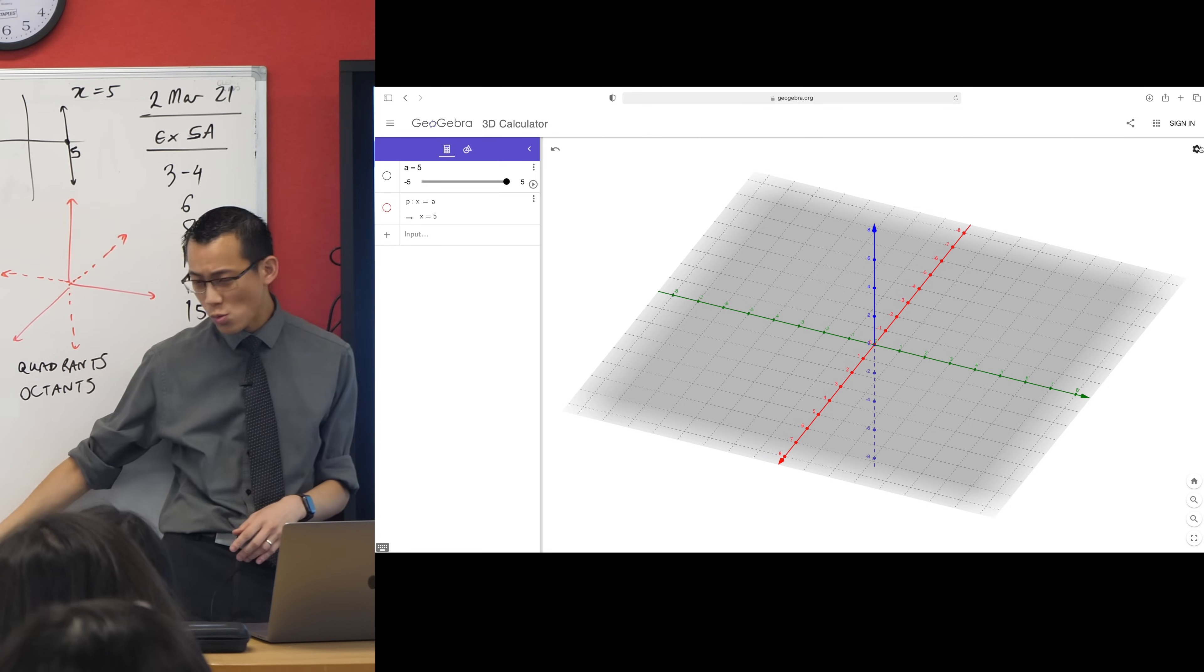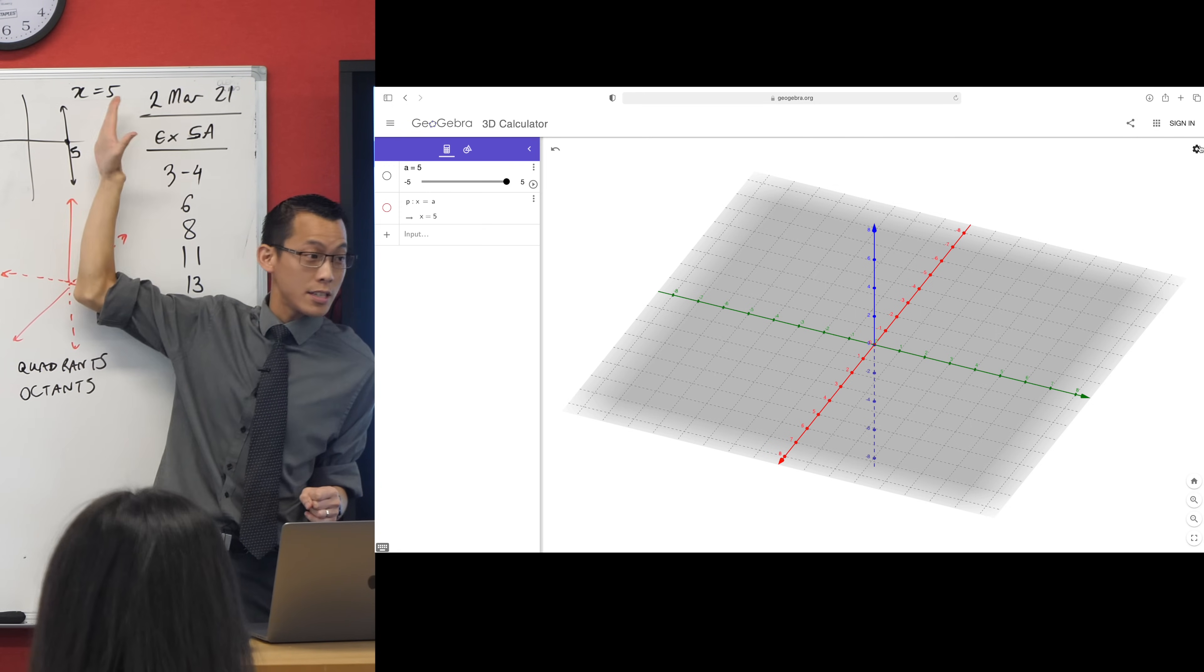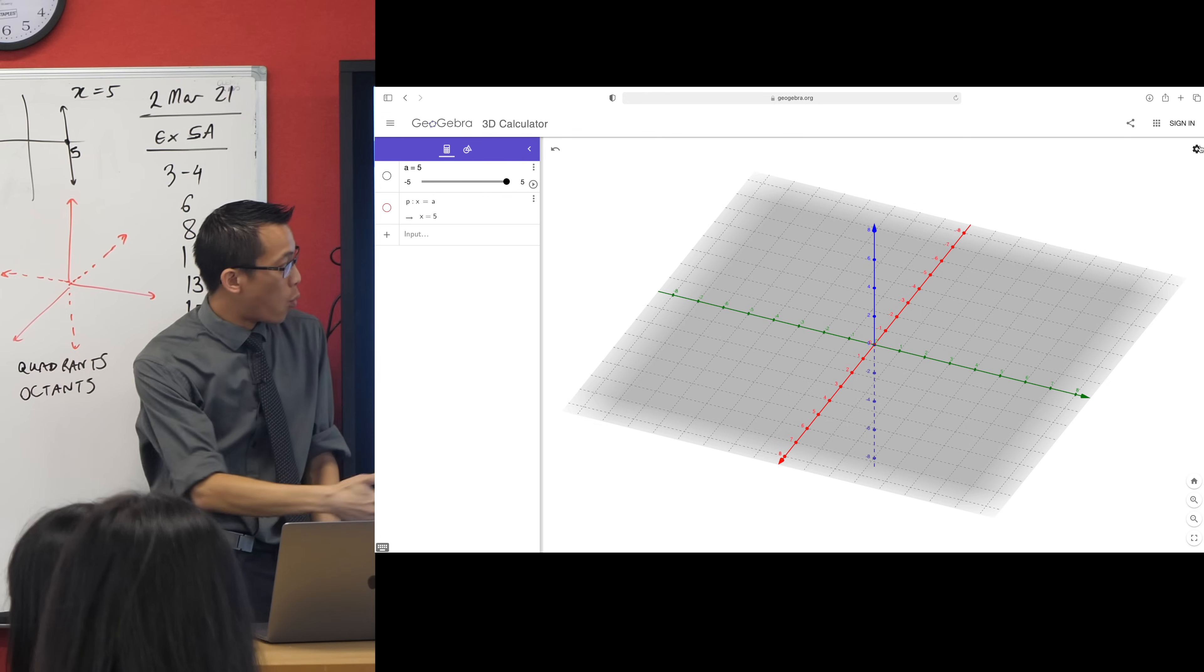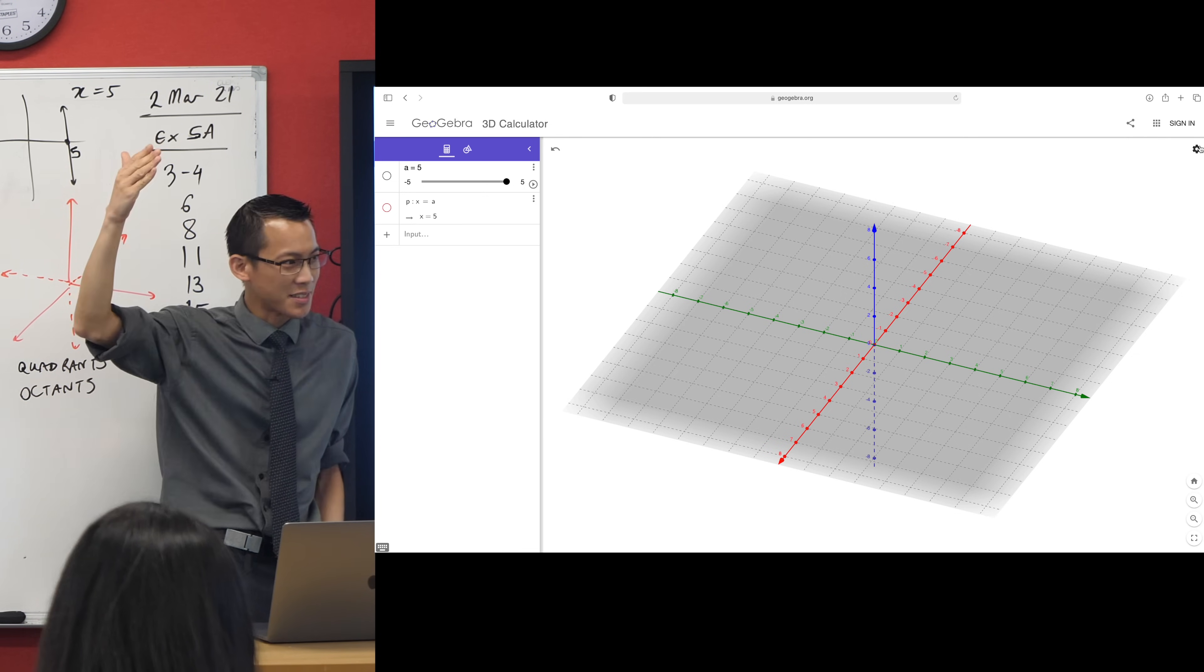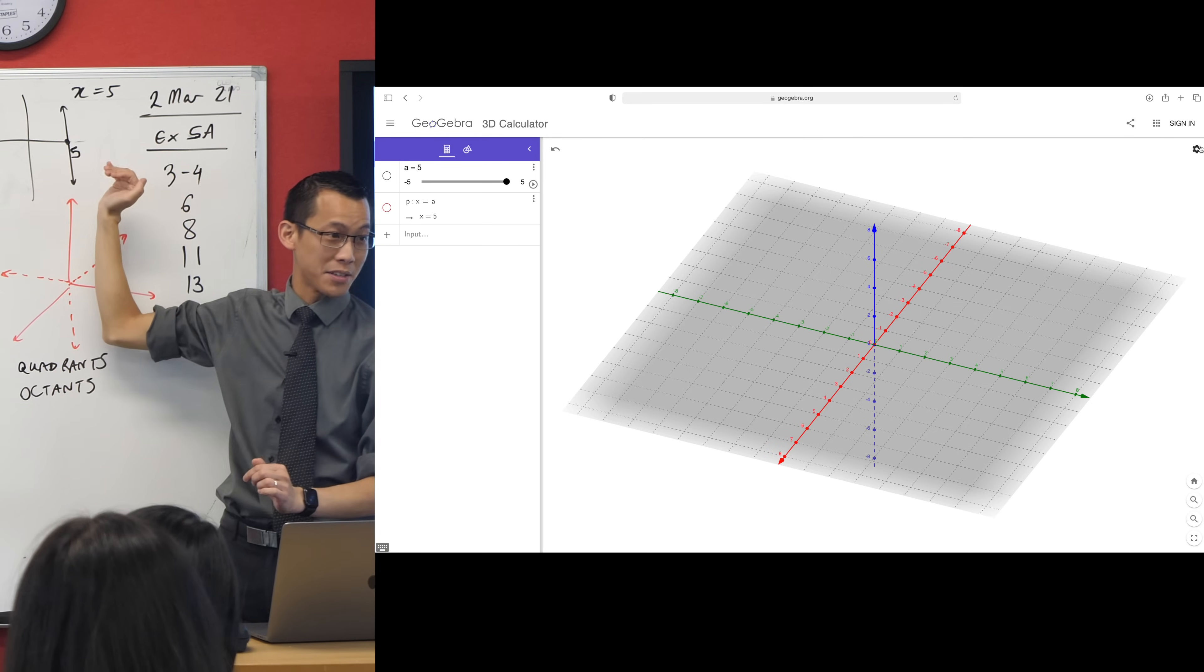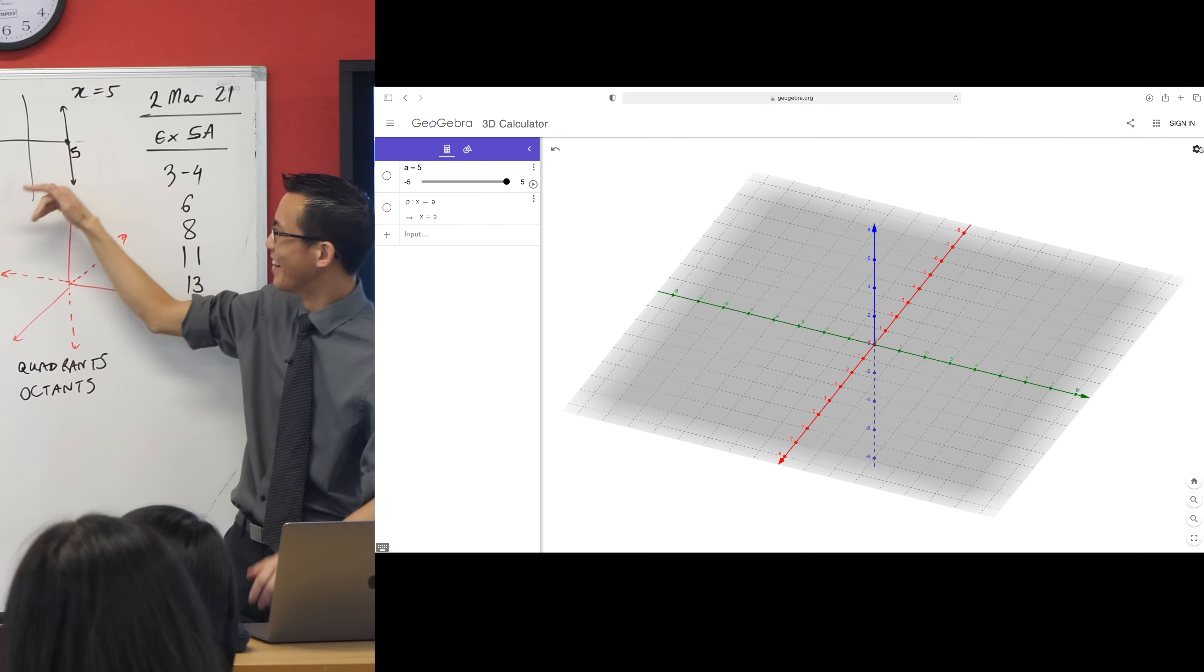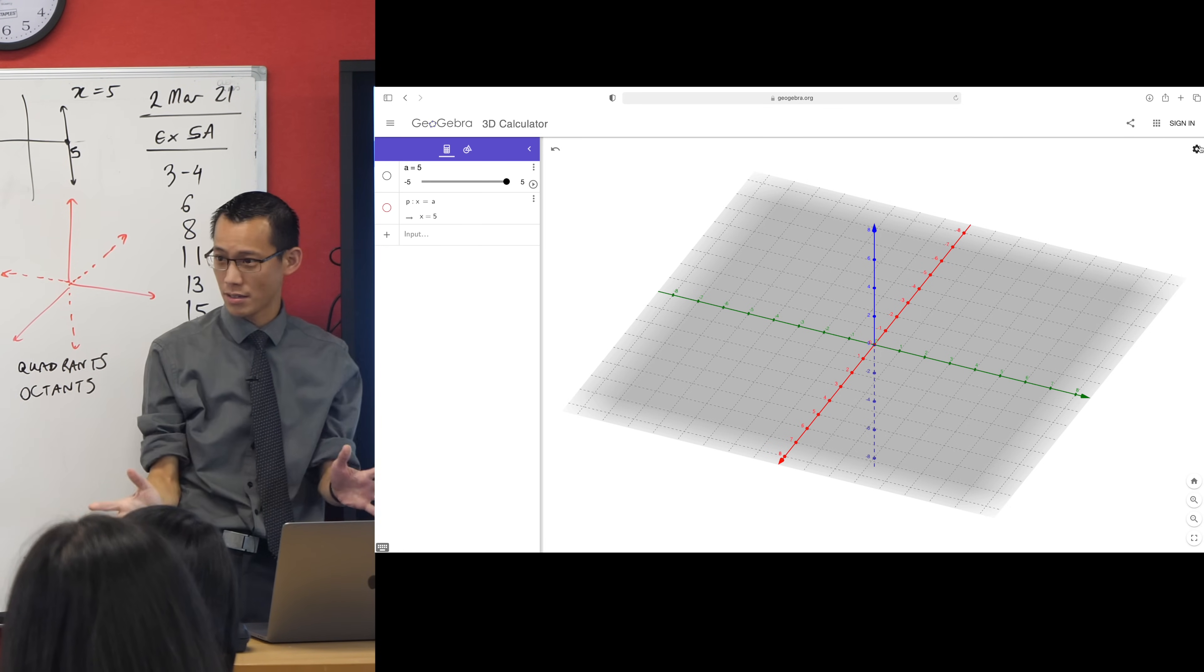What does X equals 5, I've already kind of flagged it by saying this is what it is on a number line, this is what it is on a number plane. What would it look like, X equals 5, in three dimensions? What do you think, Calvin? If we go up in dimensions. Here's my, think about this for a second. This point, it's a zero-dimensional object on a one-dimensional space. Stay with me. It's a bit weird. This line is a one-dimensional object in a two-dimensional space. Yes?